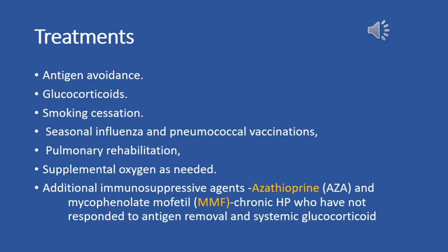The treatments for hypersensitivity pneumonitis include antigen avoidance — removing or minimizing exposure to the offending antigen is crucial and may involve changes in occupation or lifestyle. Corticosteroids, such as prednisone, are often prescribed to reduce inflammation and suppress the immune response, typically used in cases of acute exacerbations or when symptoms are severe.